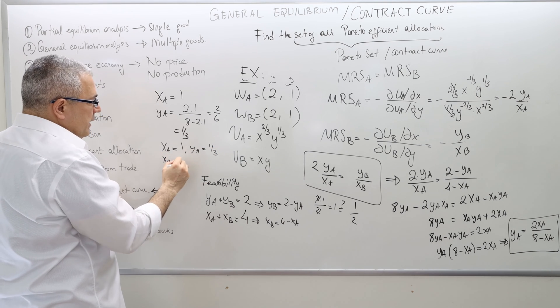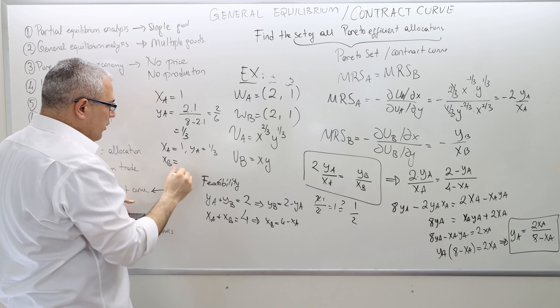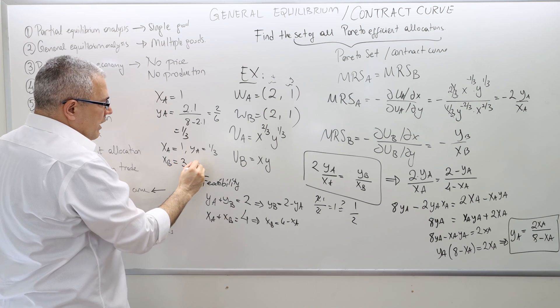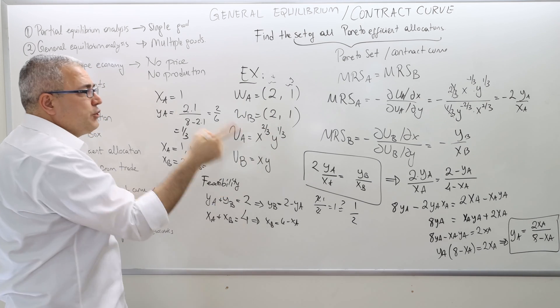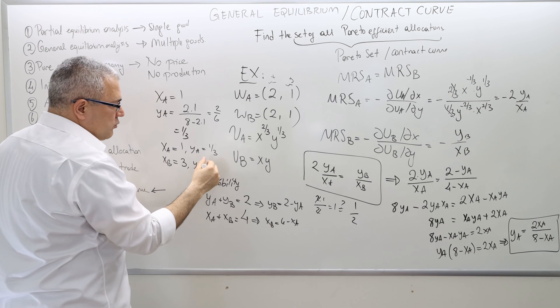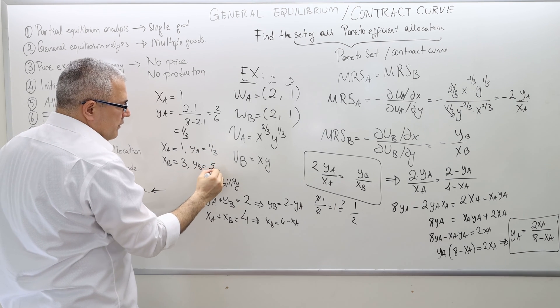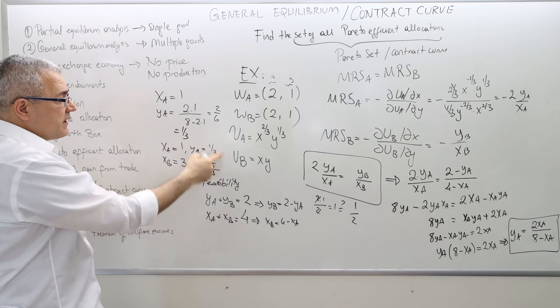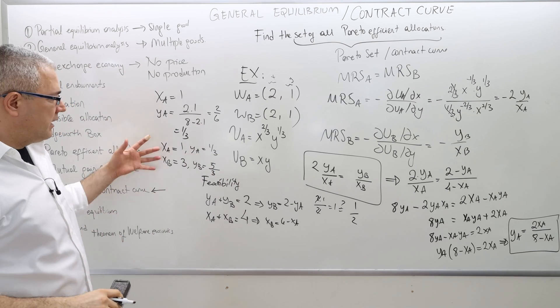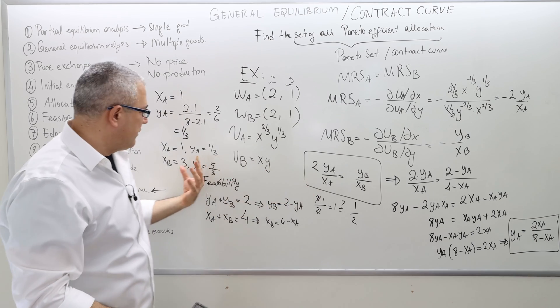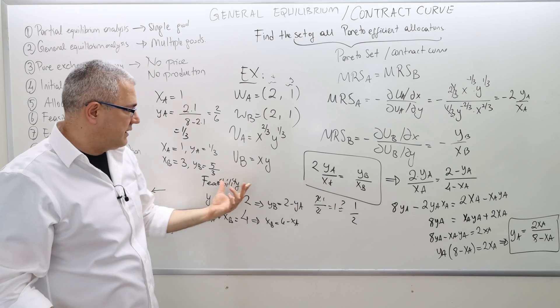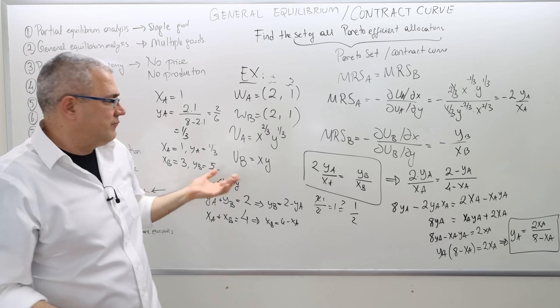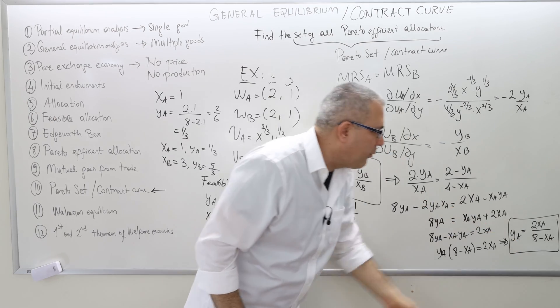Therefore, x_A equals 1, y_A equals 1/3. Therefore, x_B equals, remember, there are total 4, and so 3. y_B equals the rest, 2 minus 1/3, so 2 minus 1/3 is 5/3. So this is Pareto-efficient. You can plug it here and check it's the same. But this is how we get the point.